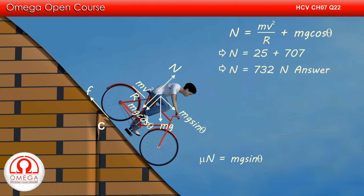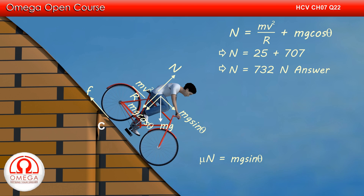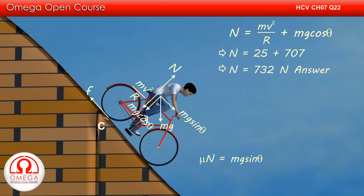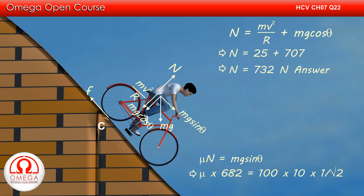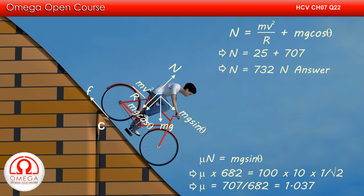The cycle is moving with constant speed along the track, so the net force on the cycle must be 0. Therefore, the component of gravity along the slope must be balanced by the friction. The inclination of the track is maximum around point C, so the coefficient of friction must be large enough to prevent slipping around point C. If μ is the coefficient of friction, then μN must equal Mg sinθ. The normal just before C is minimum and equal to 682 N. Therefore, μ×682 = 100×10×(1/√2), giving μ = 707/682 = 1.037. This is the answer to part D.